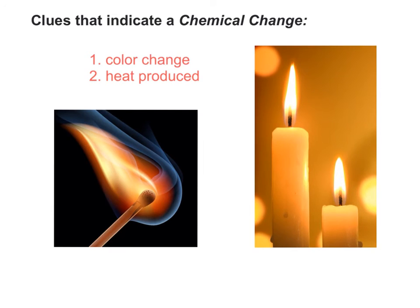The next clue to indicate a chemical change or chemical reaction is heat produced. Obviously we've got the match again and candles burning — heat is definitely produced. Sometimes when we mix chemicals, if we touch them with the back of our hand, we can feel that heat is produced, and that proves that a chemical change occurred. Please hit pause and copy down 'heat produced' into your notes.